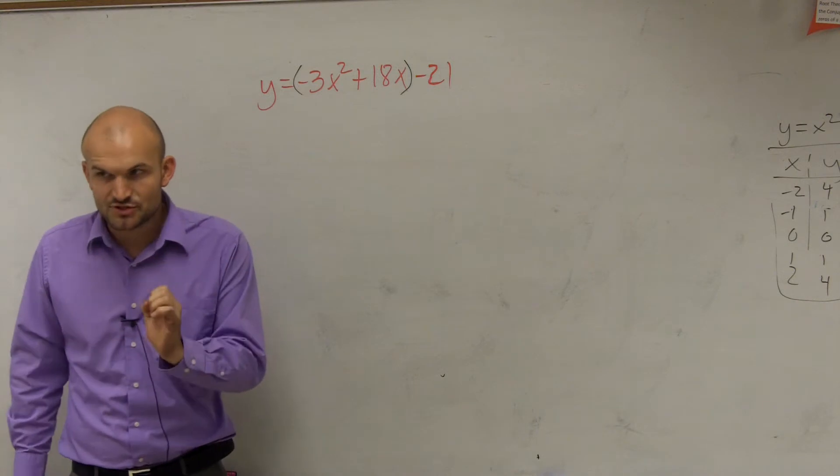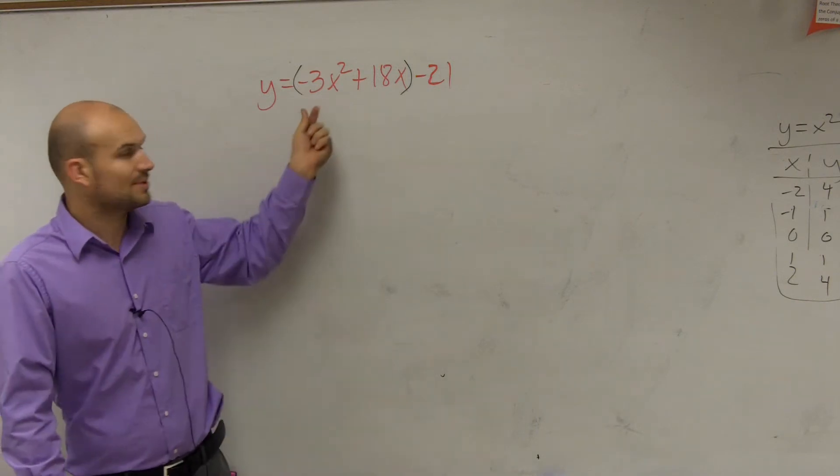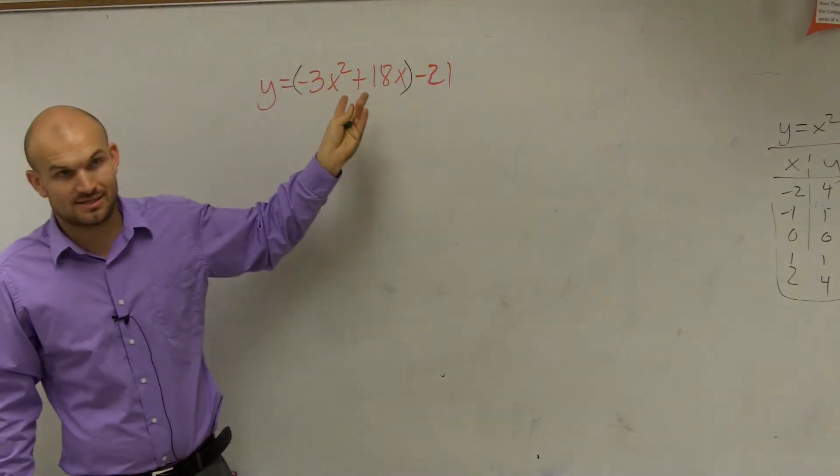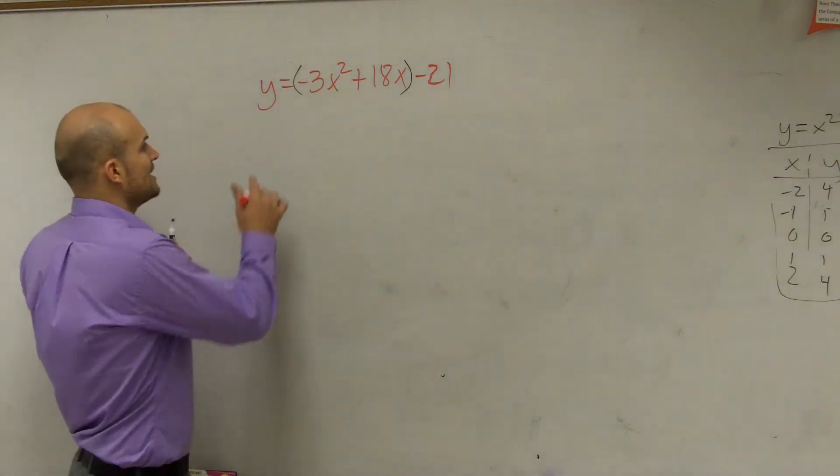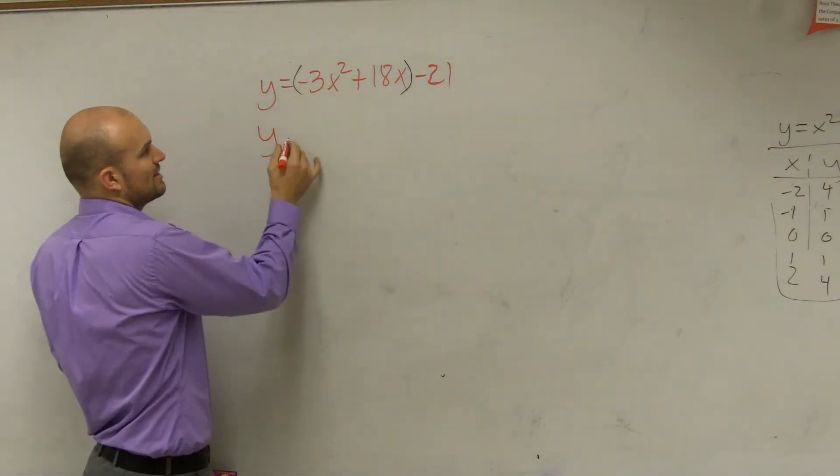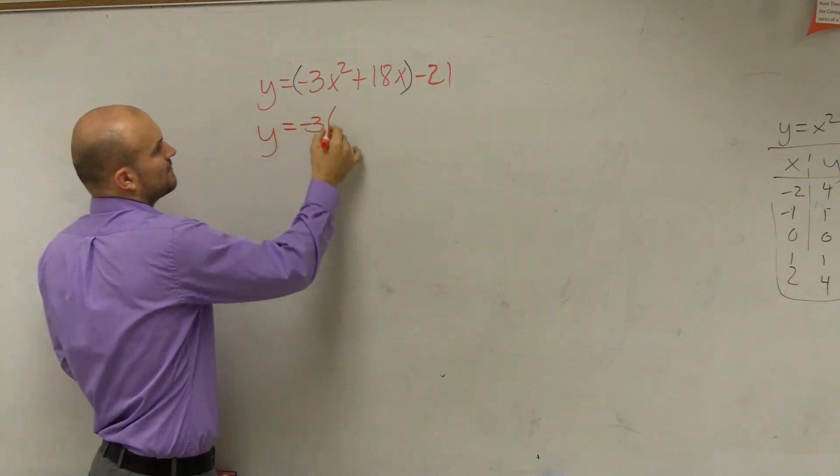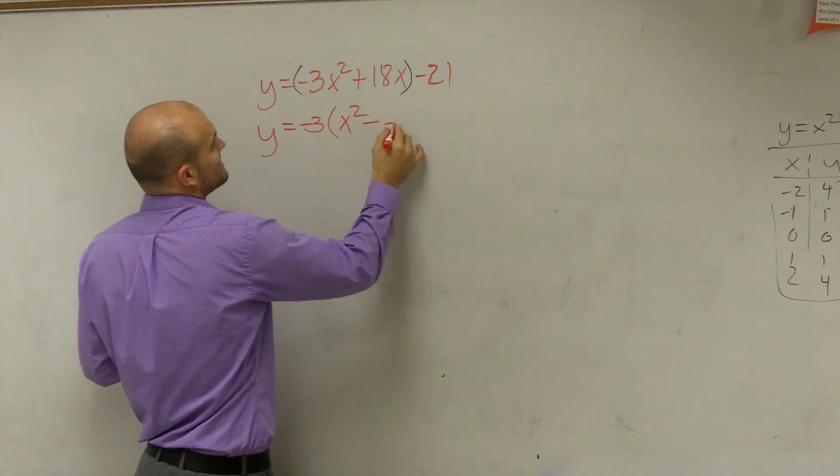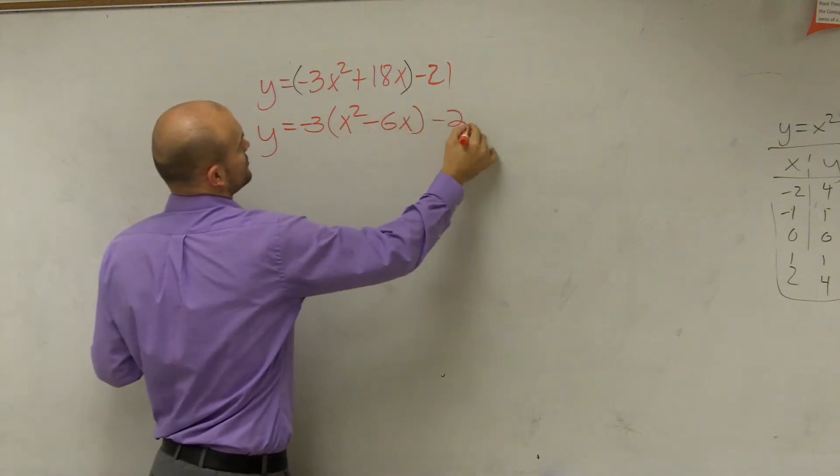Now remember, when we completed the square, we always completed the square when a was equal to 1. Is a equal to 1 in this case? No. So now the next thing I need to do is I need to factor out a negative 3. So negative 3 times x squared minus 6x minus 21.